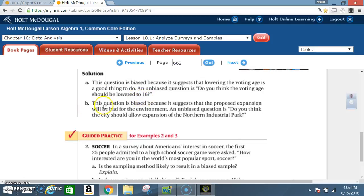Solution to question B: This question is biased because it suggests that the proposed expansion will be bad for the environment. An unbiased question is: Do you think the city should allow expansion of the northern industrial park?